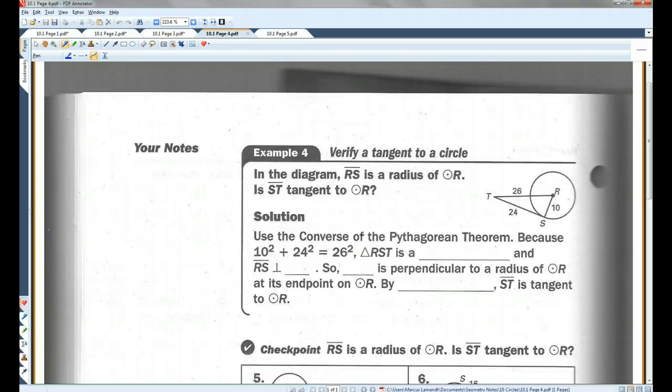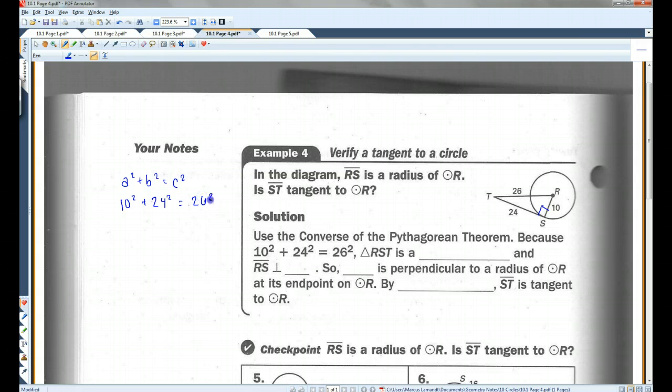Verify a tangent to a circle. In the diagram, segment RS is a radius. Is ST tangent to circle R? Now, this is what you need to think about. If this is a tangent line and this is a radius, they have to make a right angle. That's what we just learned in the most recent theorem. If this makes a right angle, then we have shown here a right triangle. So we're going to use the converse of the Pythagorean theorem because 10 squared plus 24 squared plus 26 squared. We have A squared plus B squared equals C squared. In this case, 10 squared plus 24 squared equals 26 squared.